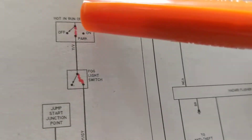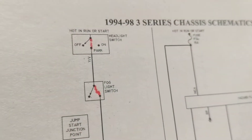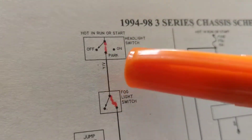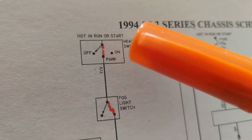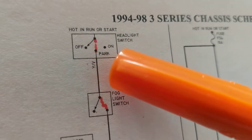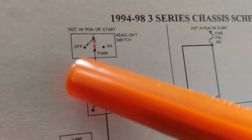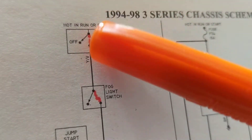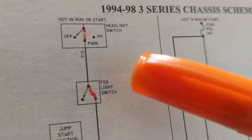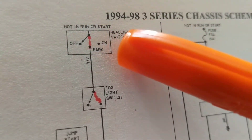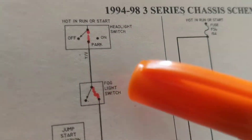We know that current can only flow when the circuit is complete from B+ to ground. If you look at this, you see three positions available for the switch: off position, park position, and on. Off means nothing will be activated. Park means there is a connection. If you put it on 'on,' nothing is connected — so for our purposes we just want to turn on the parking lights or the fog lamps.